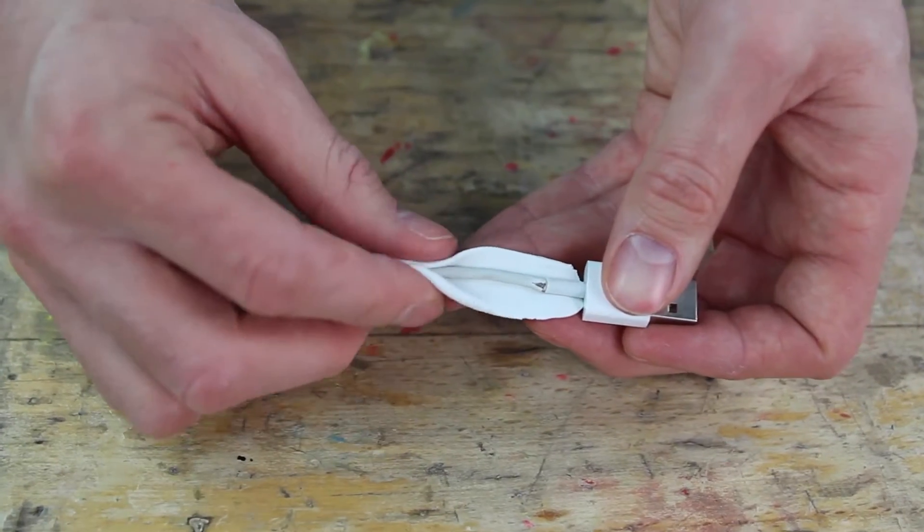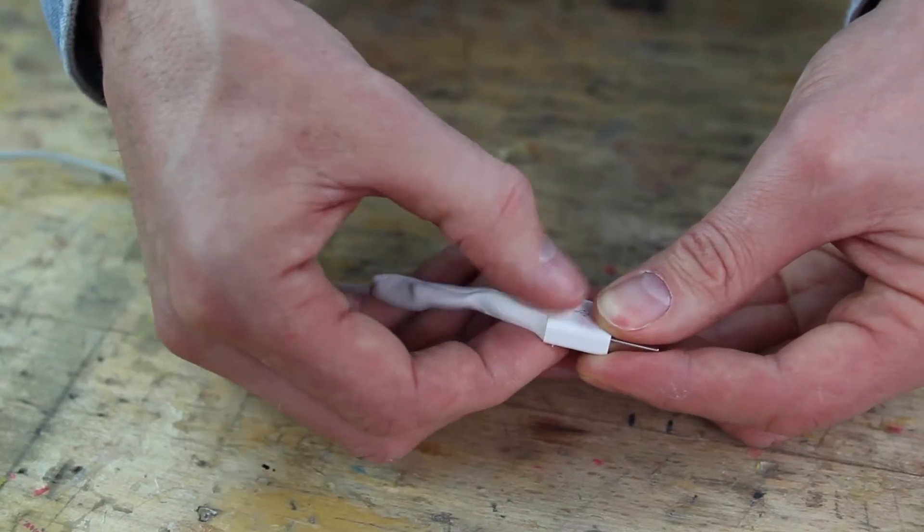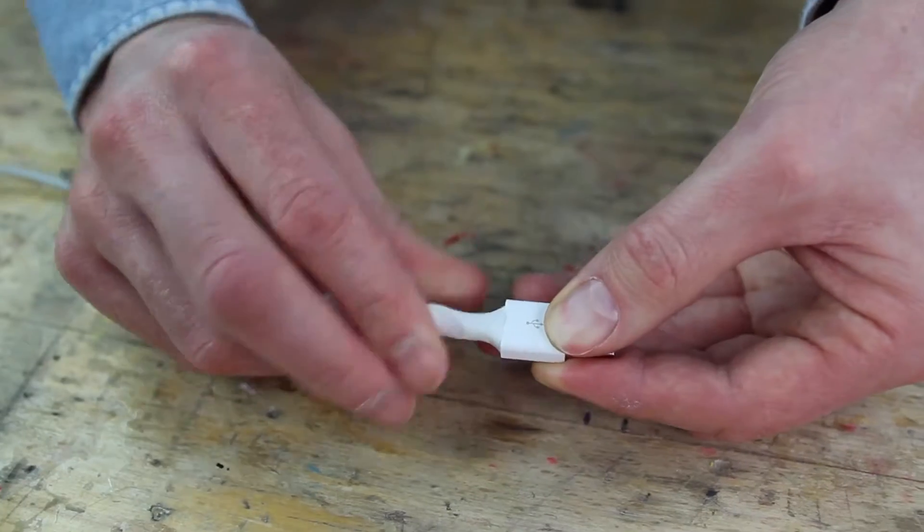Now wrap the flat sausage around it. Squish the Sugru onto the surface, working it in from all angles to ensure a strong bond.